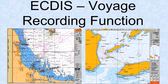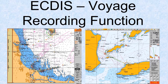The VDR is in the form of several separate but interconnected units, and it provides data regarding the position of the ship, movement, physical status, command and control of a vessel over a period leading up to an incident. So these are two separate things.